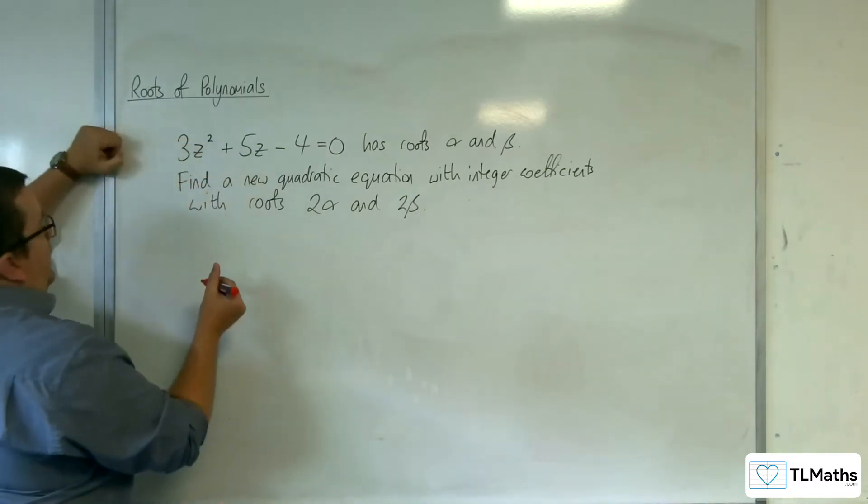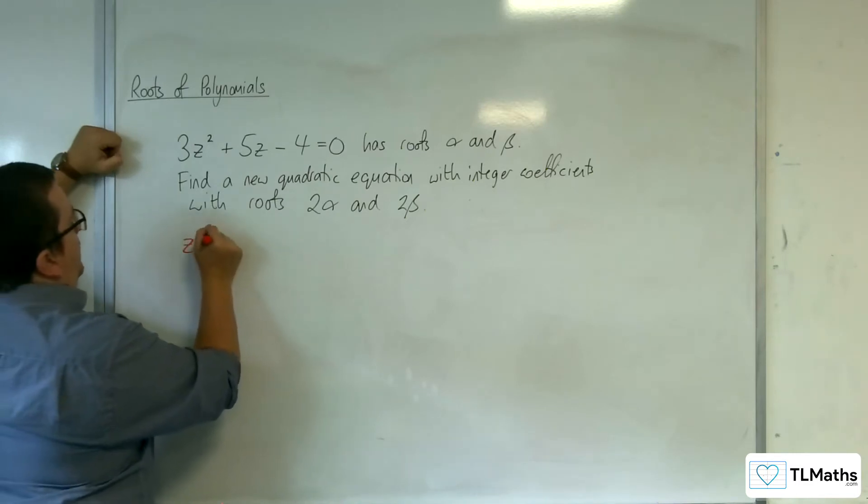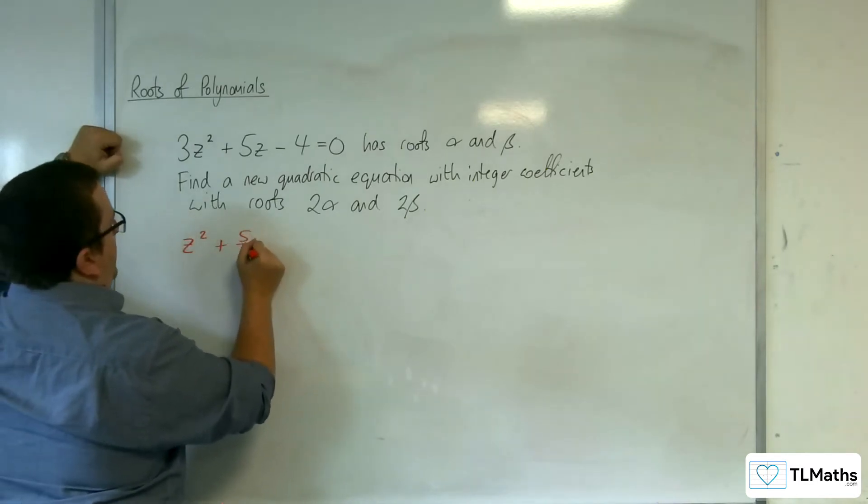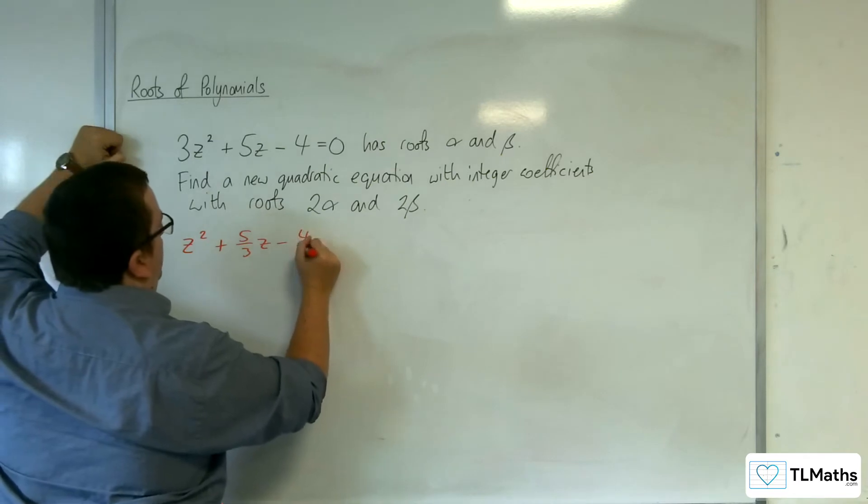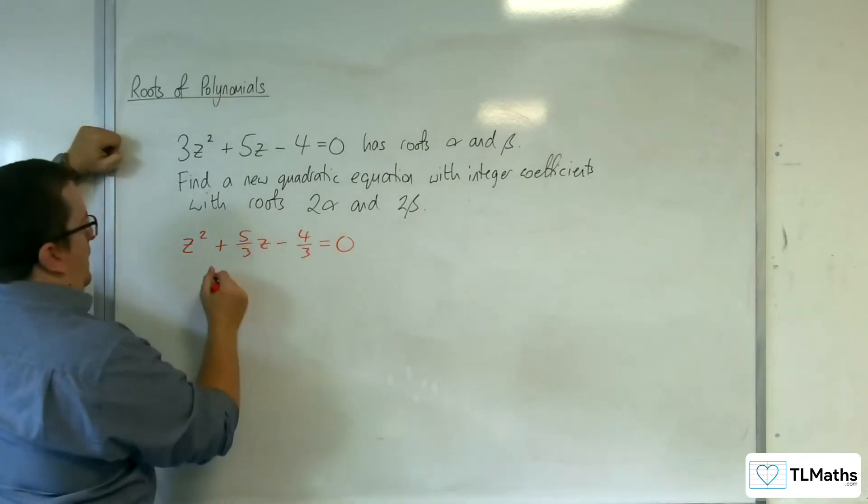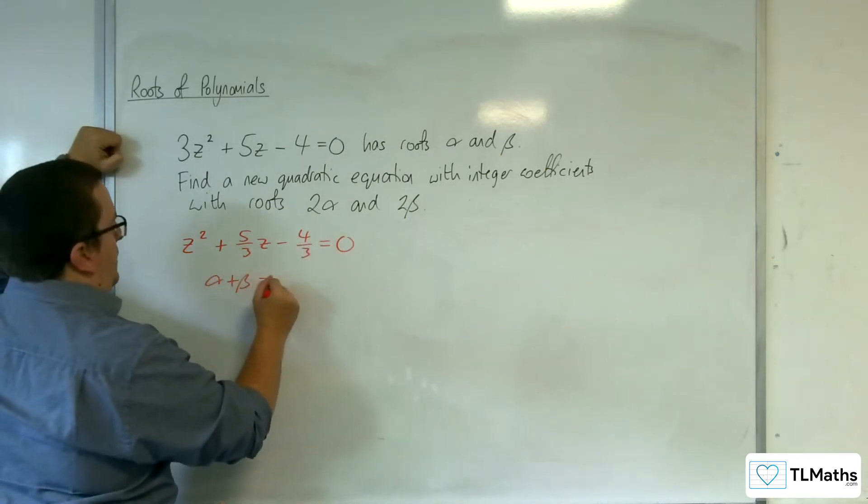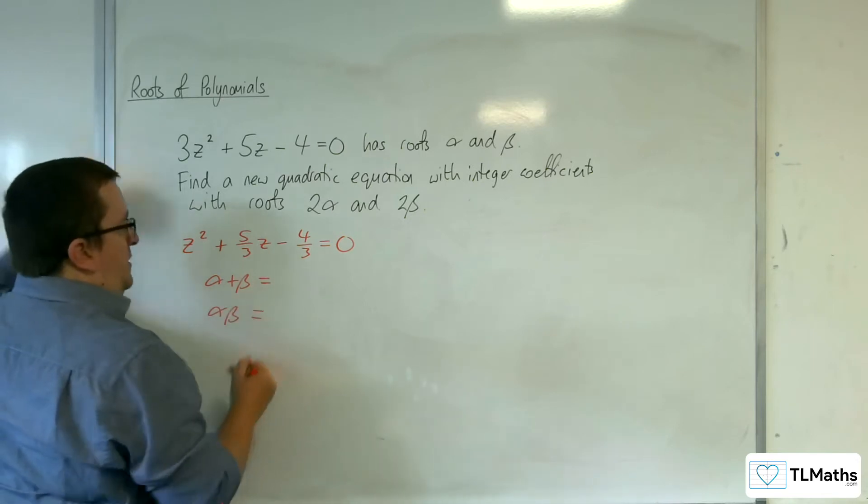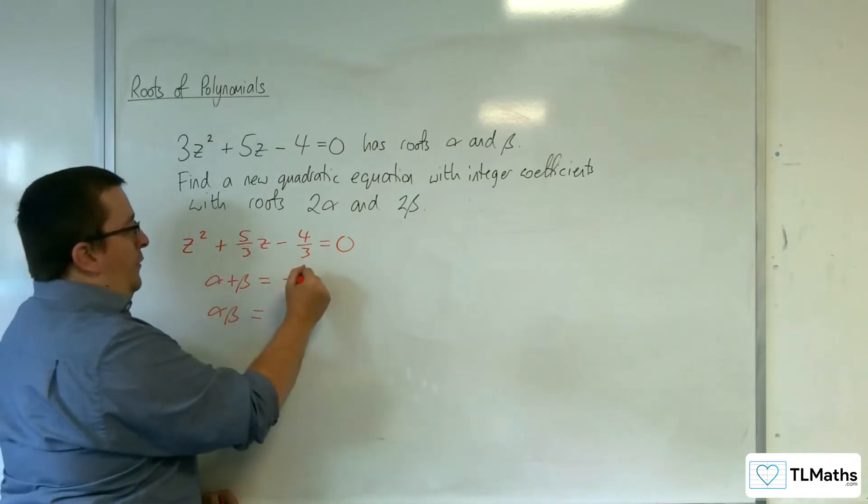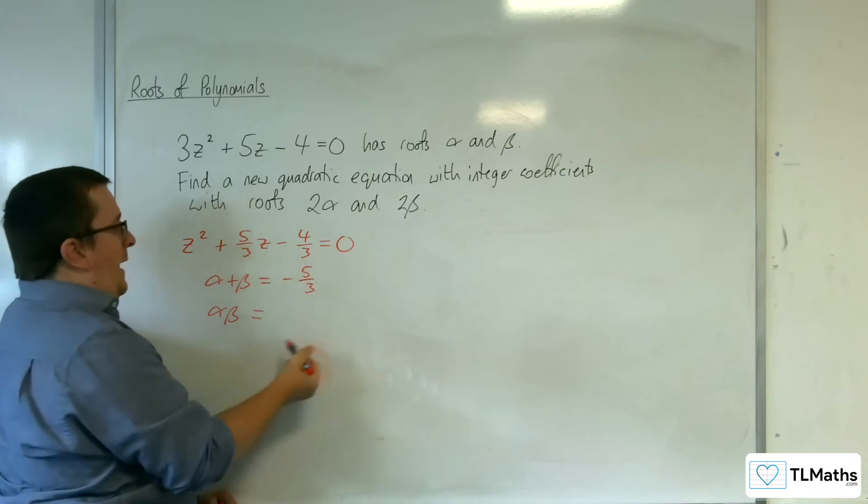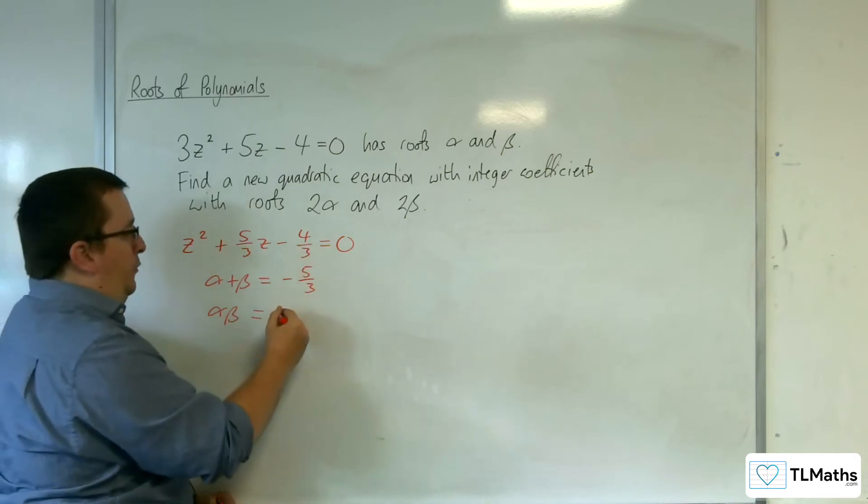I'm going to have to divide through by 3 first. So z² + 5/3z - 4/3 = 0. So I can write down the sum and product of the roots. So α + β is -5/3, and αβ is -4/3.